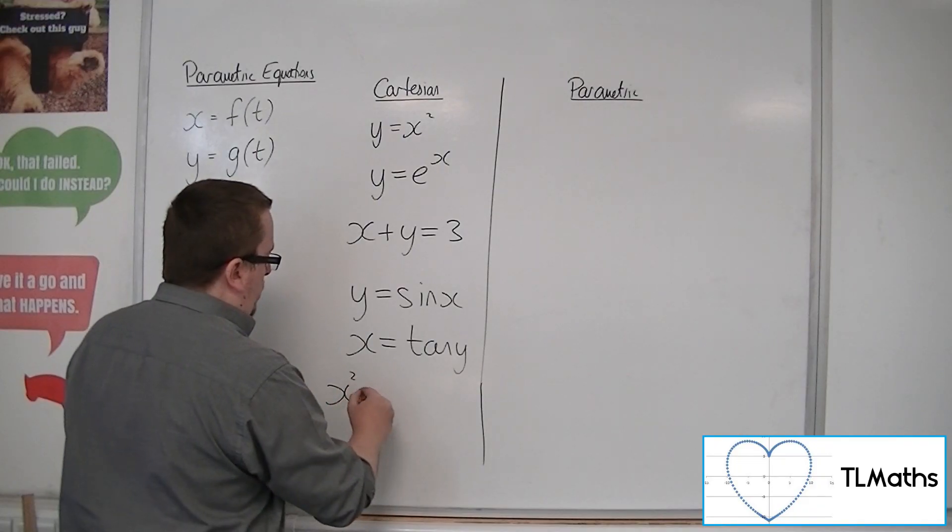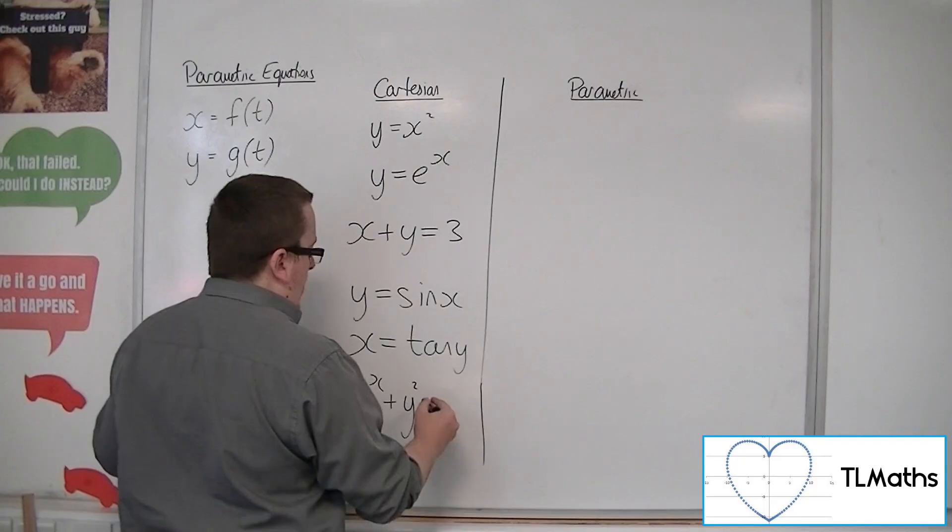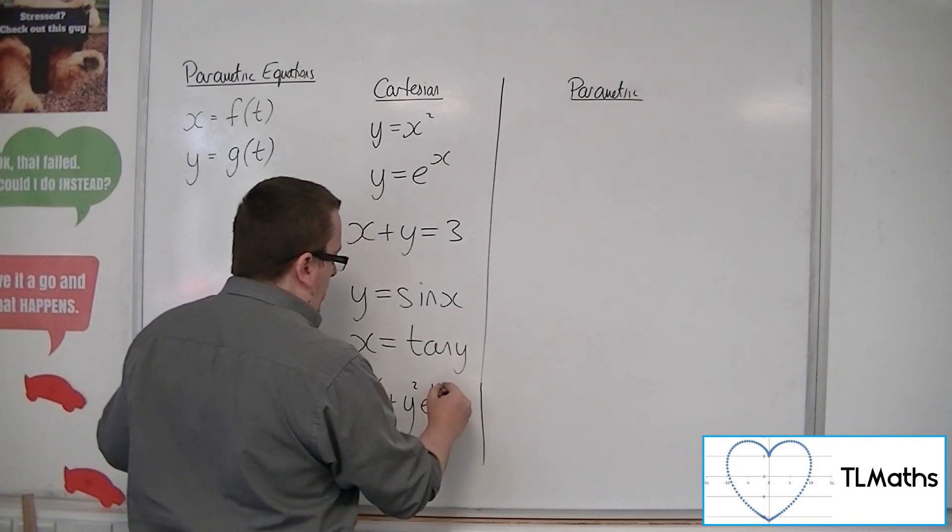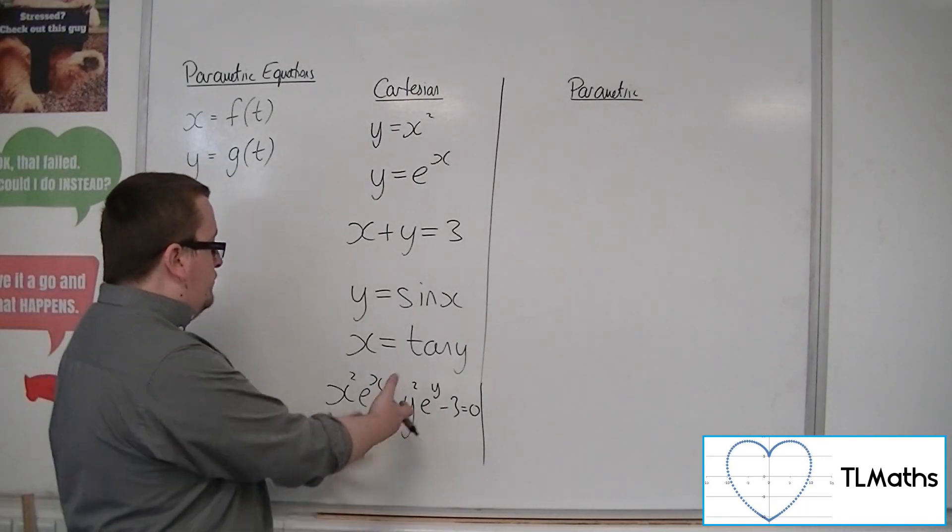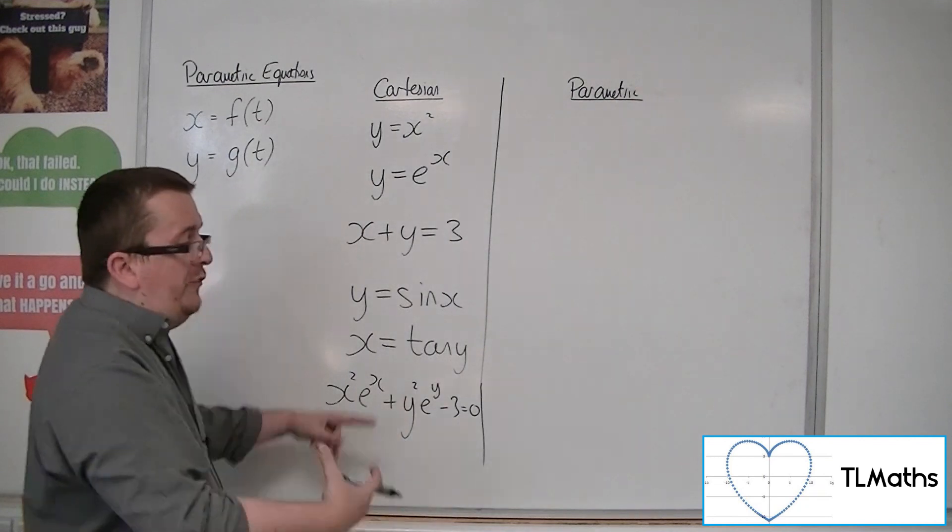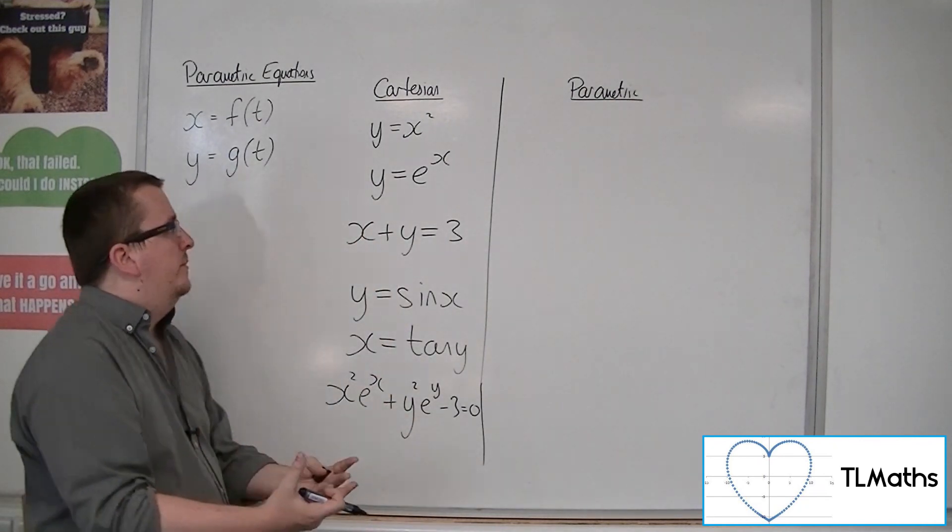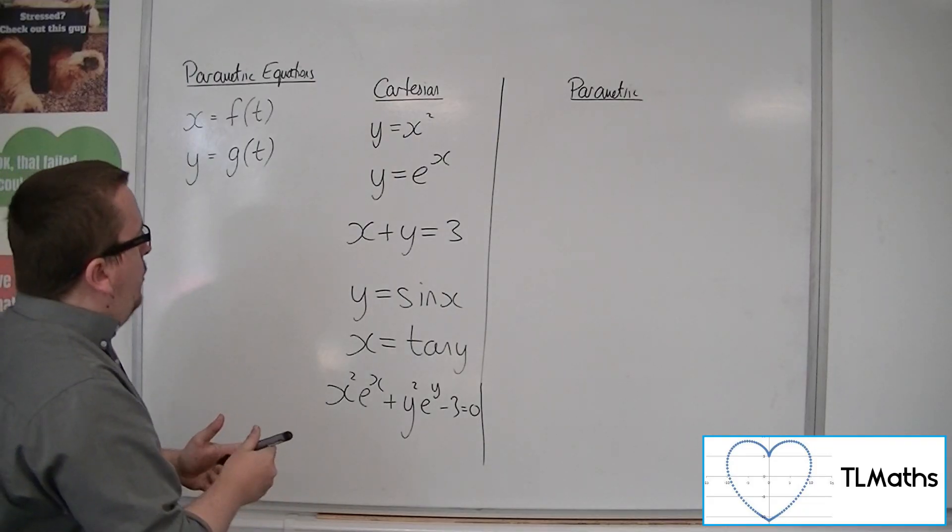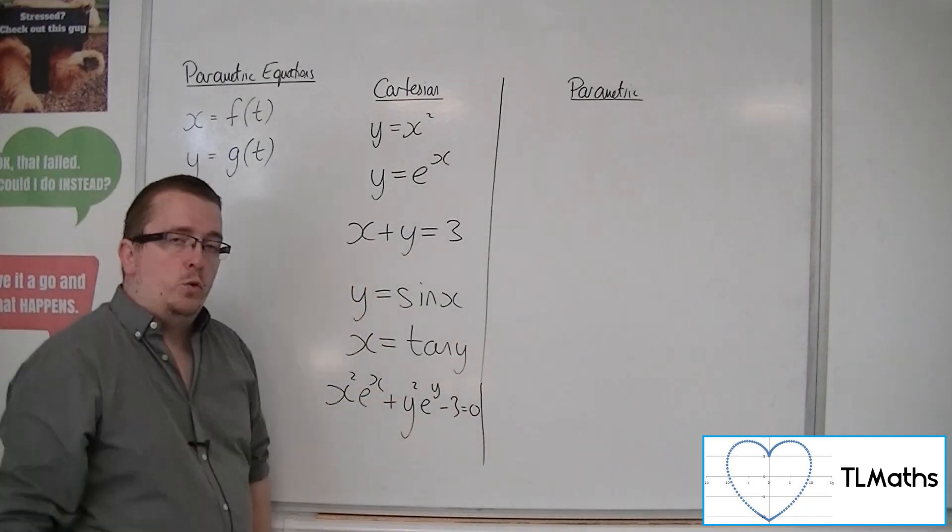Or x squared e to the x plus y squared e to the y minus 3 equals 0. So goodness knows what that looks like. The point is that these are all self-contained single equations where you have these two variables, x and y, within that single equation.